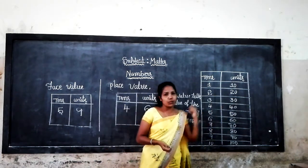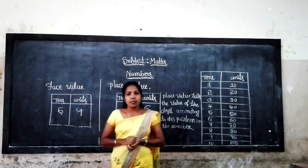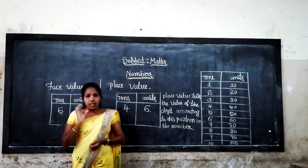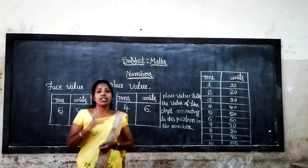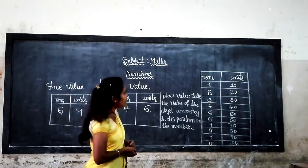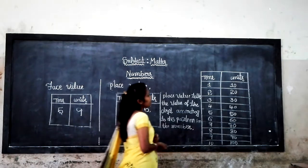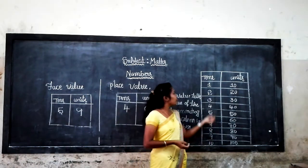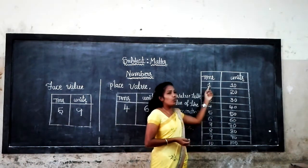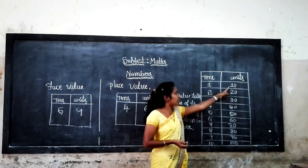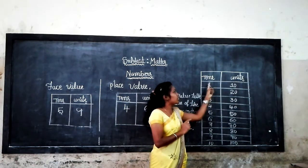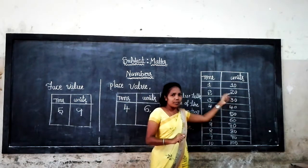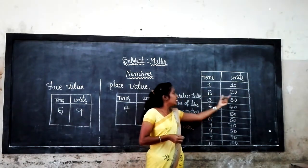What is tens and units? In the previous class, as I told you, 10 units make one ten, isn't it? Let's look at the chart to understand better. 10 units make one ten. 20 units make 2 tens.